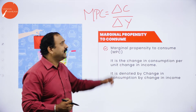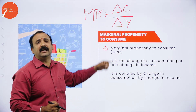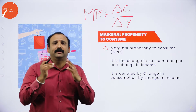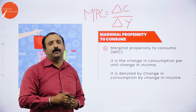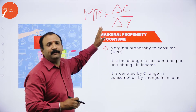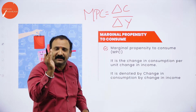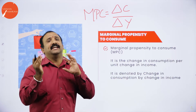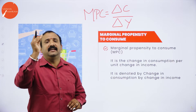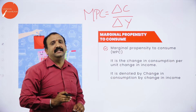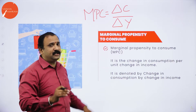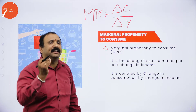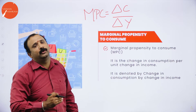This change in consumption for change in unit income is denoted by delta C divided by delta Y. This formula is very important from an exam standpoint. The word marginal is used because this increase does not happen all at once — it happens in a step-by-step manner.